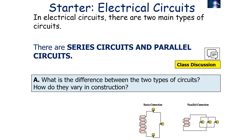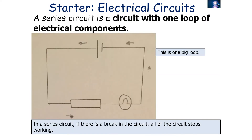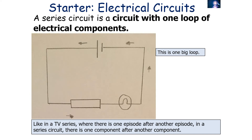In electrical circuits there are two main types: series circuits and parallel circuits. A series circuit is a circuit with one loop of electrical components. If there's a break in the circuit, all of the circuit stops working. A loop can also be described as a path, so a series circuit has one loop or one particular path of electrical components.